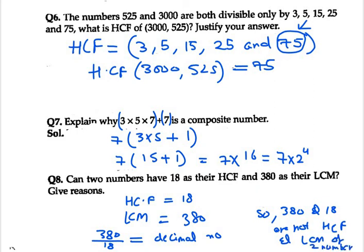The quotient must be a natural number. If it is not a natural number then we can't consider them as HCF and LCM of two numbers. That's all for question number 8, thank you for watching.